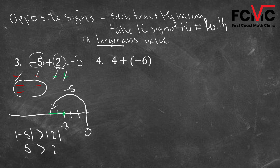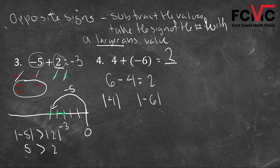Let's do example 4: four plus negative six. We want to subtract the two values — what's the difference between six and four? That is two. Now we figure out the sign: we take the sign of the number with the larger absolute value. The absolute value of four is four; the absolute value of negative six is six. Negative six has a larger absolute value, so our sign is going to be negative. Our answer is negative two.